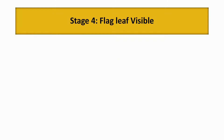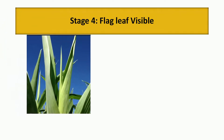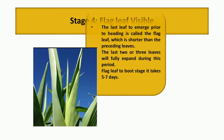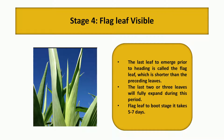Coming to the fourth stage, the flag leaf visible stage — this is the last leaf which emerges prior to heading. The leaf is shorter and two to three leaves are fully expanded during this period. From the flag leaf stage to the boot stage, it takes five to seven days.